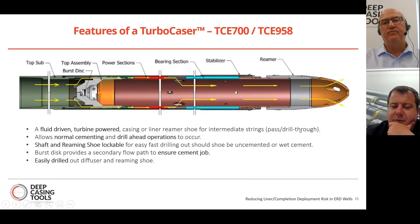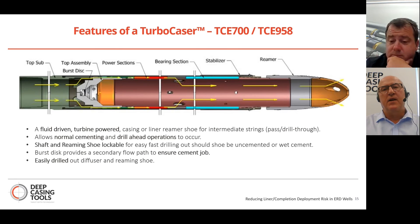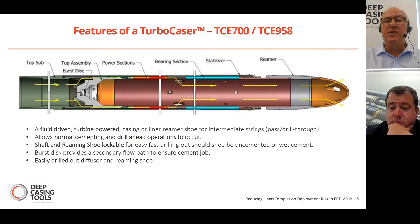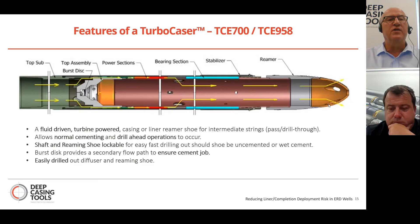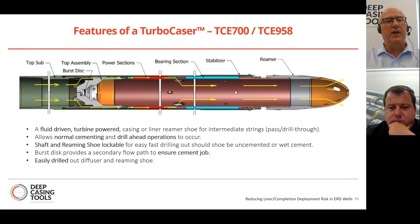One additional benefit highlighted by clients using Turbo Casers is an enhanced cement bond. Cement bond logs around the shoe track section are typically better, and clients believe this is due to the secondary shear the cement gets when going down through the turbine blades and around the shoe track.